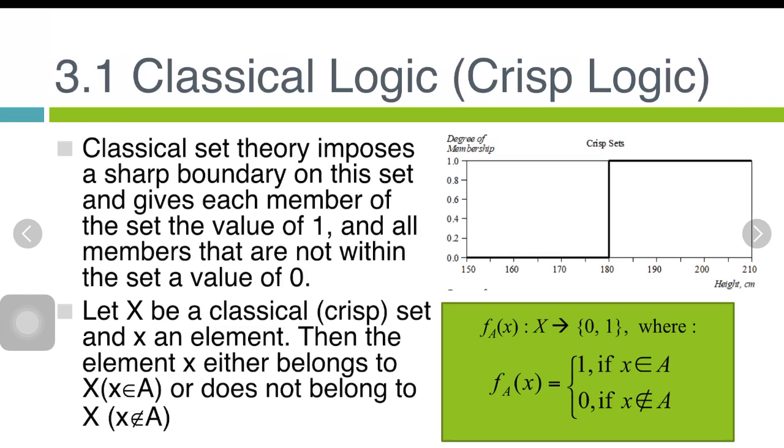First subtopic to be covered will be on classical logic, or we can also say this as crisp logic. What is classical logic? Classical set theory imposes a sharp boundary on the set, for example, and gives each member of the set the value of one and all members that are not within the set a value of zero.